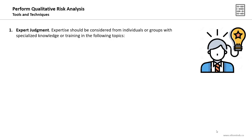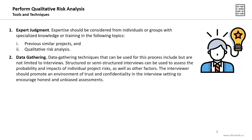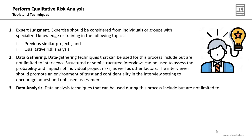Seven tools and techniques will be used in this process, starting with the most popular one: expert judgment. The experts you should consider should have knowledge and experience in previous similar projects when it comes to risk management and qualitative risk analysis. The second technique is data gathering, and specifically we will be using interviews. Either structured or semi-structured interviews can be used to assess the probability and impact of individual project risks. The interviewer should promote an environment of trust and confidentiality to encourage honest and unbiased assessment. Interviews are conducted with key stakeholders to determine and assess the probability and impact of key individual project risks.